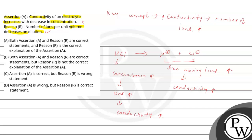Assertion is incorrect, but reason is correct. Option D is the right answer of this question. I hope this is clear. Best of luck.